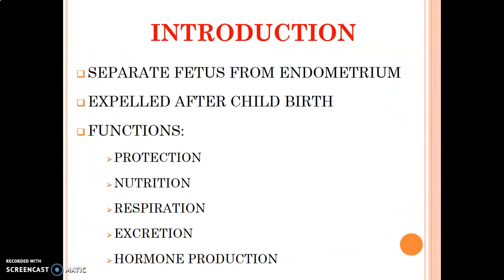The fetal membranes are produced during pregnancy, and the placenta generally separates the fetus from the endometrium of the uterus and is usually expelled after childbirth. It has various functions: it helps protect the fetus from toxic substances in maternal blood, has a nutritional role to provide nutrients from maternal blood to the fetus, and allows respiration — oxygen from maternal blood to the fetus and carbon dioxide from the fetus to the mother.